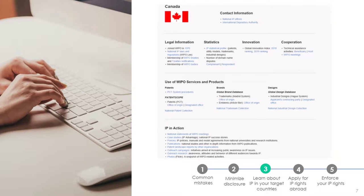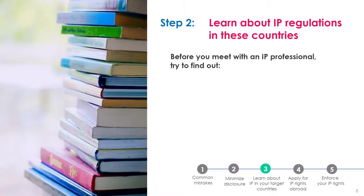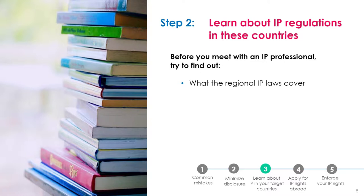Now that we know where to look for information, let's take a closer look at the things that can be useful to investigate. As you're preparing to meet with an IP professional, also try to find out a few things. First, determine what the regional IP laws cover and if there are any exclusions to what you can protect. There may also be differences when it comes to what's eligible for IP protection, such as biological matter and software.